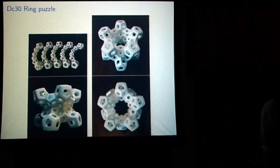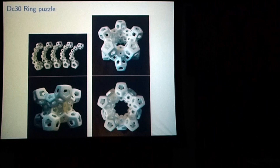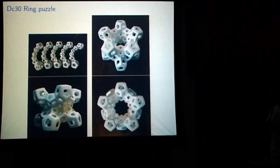What you have to do is: it comes out of the printer as five separate pieces, and then you have to figure out how to put it together to make this object. Solving the puzzle is not that easy, but unsolving it is quite a lot easier.